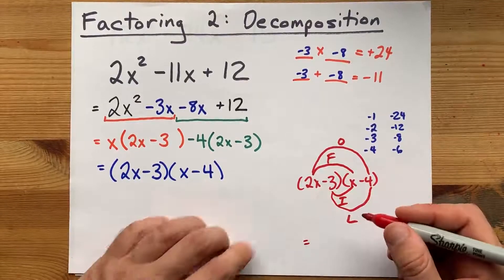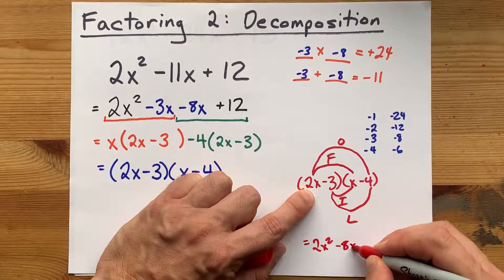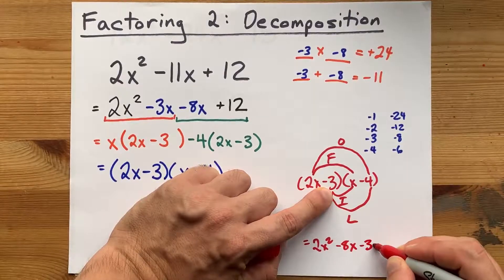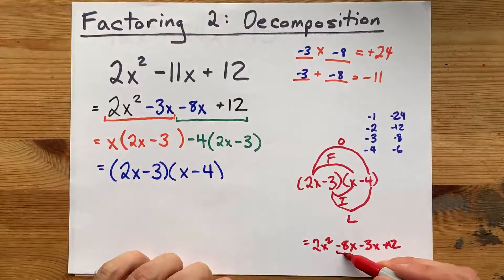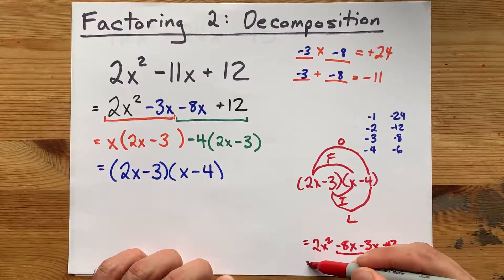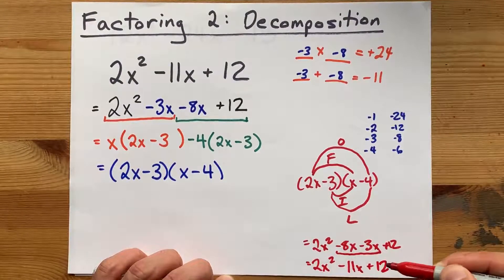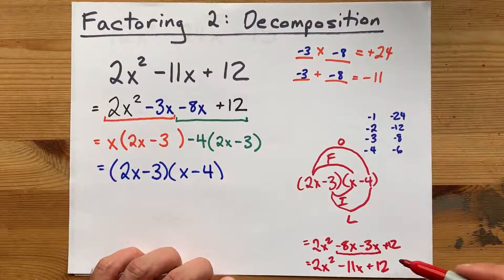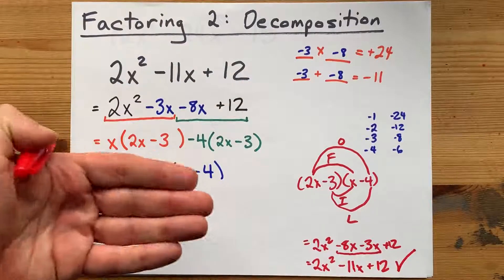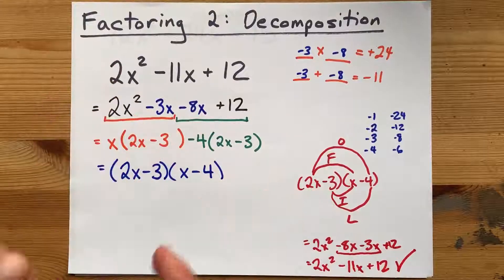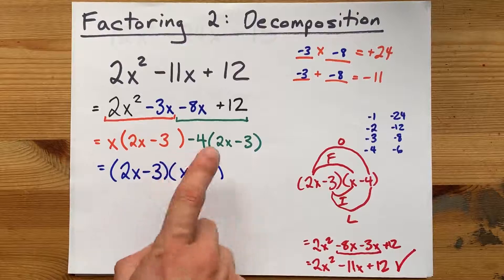Whatever. Let's just multiply it out. 2x times x is 2x squared. 2x times minus 4 is minus 8x. Minus 3 times x is minus 3x. Minus 3 times minus 4 is plus 12. And these two terms collect to give you 2x squared minus 11x plus 12. Oh, look. That was what we started with, which means, yes, we have factored it properly. This expression and this expression are the same thing. They represent the same graph, but they are written differently. One is in standard form. One is in factored form.